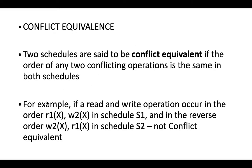An example: if we have R1(X) — the first transaction reads X — followed by W2(X) — the second transaction writes X — that is one schedule and one order. If in another schedule this occurs in reverse, W2(X) followed by R1(X), the order is opposite in both schedules.